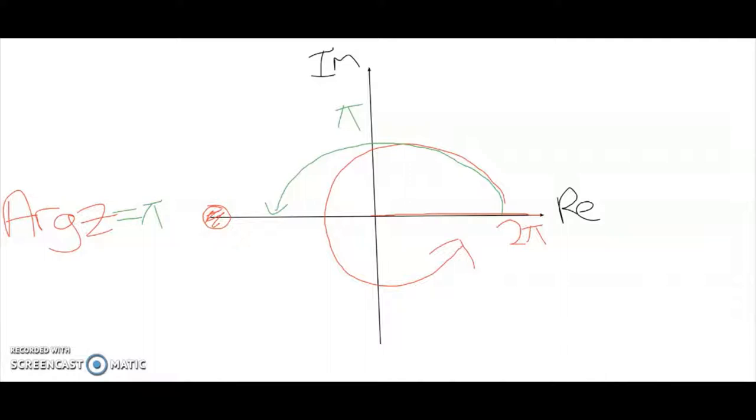Similarly, we could also go the other way, but it will of course be negative. So if we were to go this way, the argument would be negative π. They are the same thing.